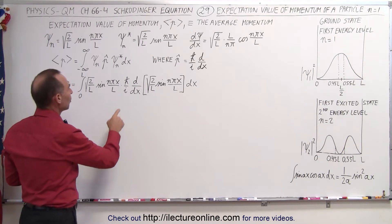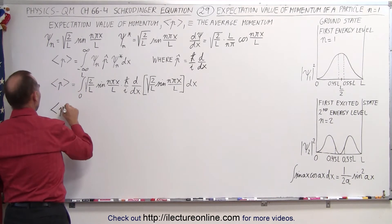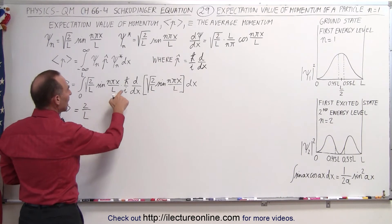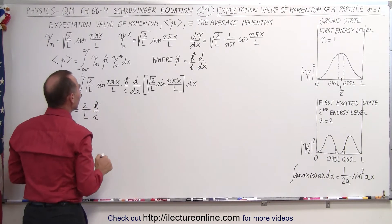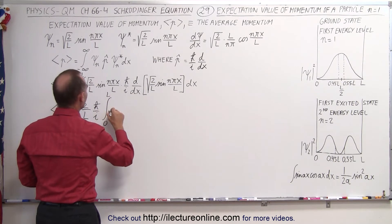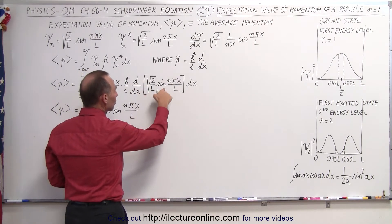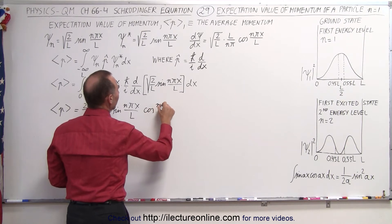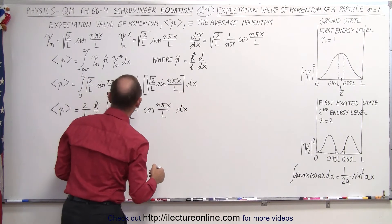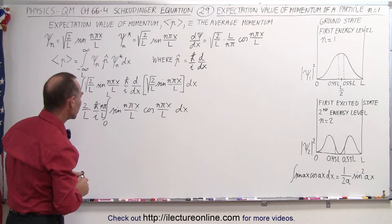Now when we evaluate this, we first take out all the constants. We have the expectation value of the momentum equal to 2 over L — since this quantity times this quantity means the root cancels out — times h-bar over i. Then we have the integral from 0 to L of the sine of n pi x over L times the derivative with respect to x of that quantity, which gives the cosine of n pi x over L times n pi over L.